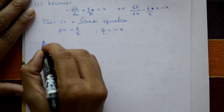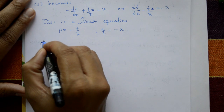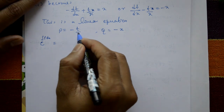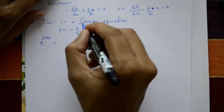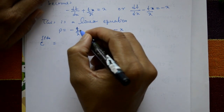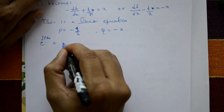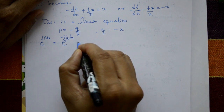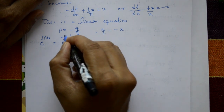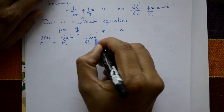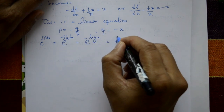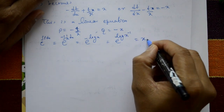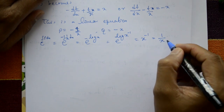Now find the integrating factor: e^(∫p dx). p is -1/x, so e^(∫-1/x dx) = e^(-log x) = e^(log x^(-1)) = 1/x. The integrating factor is 1/x.